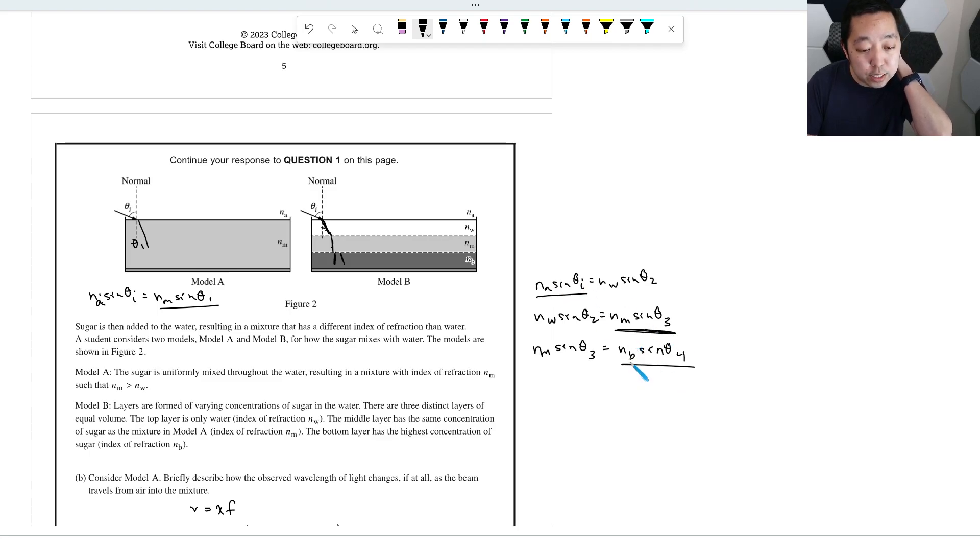However, this theta 1 matches this NA and the NM. Which one has NM is sine of theta 3. So theta 3 is going to match theta 1, because these are all equal to each other. So NM sine theta 3 is the same as NA sine theta I. So that means theta 3 and theta 1 both have the NM. So therefore theta 1 equals theta 3.